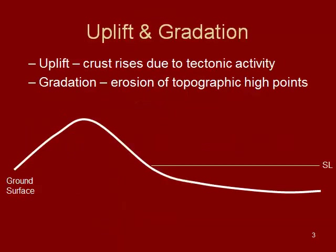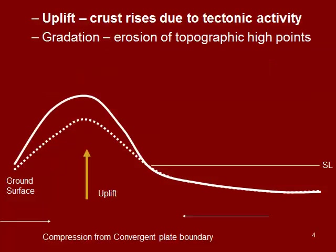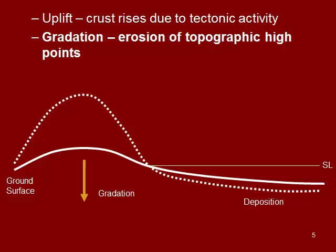To review a little bit: uplift and gradation. This is the process by which a lot of these landforms begin to form. Uplift causes the crust to rise because of tectonic activity — plates colliding and forcing parts of the Earth up to higher elevations. Gradation is the erosion of those topographic high points. We're going to see the various ways this erosion happens: through glaciers, through mass wasting, through streams, and so on.